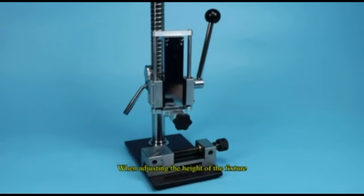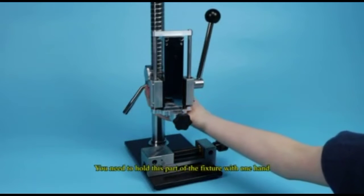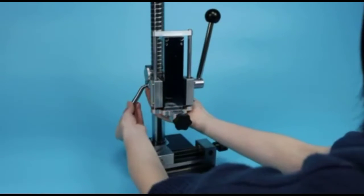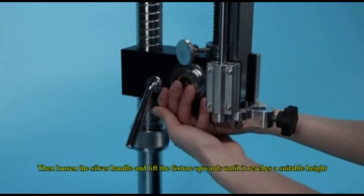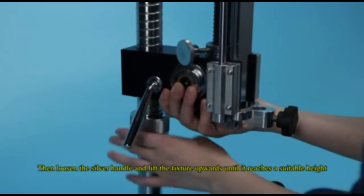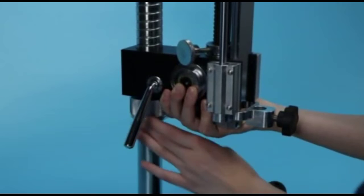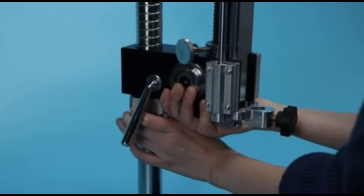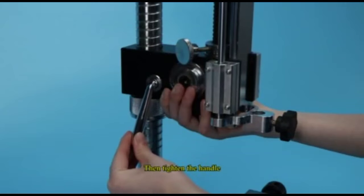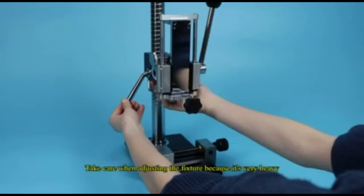When adjusting the height of the fixture, you need to hold this part of the fixture with one hand. Then loosen the silver handle and lift the fixture upwards until it reaches a suitable height. Then tighten the handle. Take care when adjusting the fixture because it's very heavy.